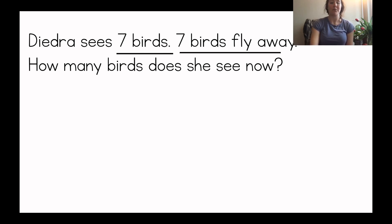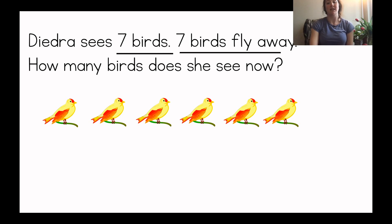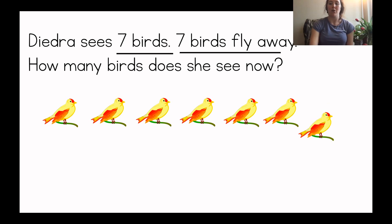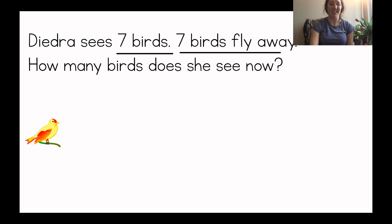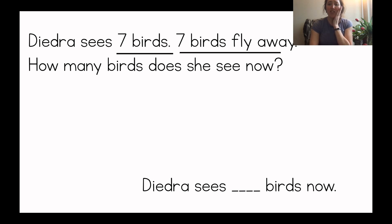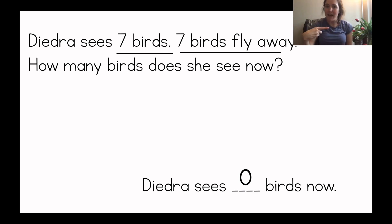First I'm going to show the seven birds that Deidre saw: one, two, three, four, five, six, seven. And then how many birds are flying away? Seven birds are flying away. Watch the seven birds fly away: one, two, three, four, five, six, seven. Seven birds flew away. How many birds does Deidre see now? There aren't any — that means Deidre sees zero birds. Seven minus seven equals zero.